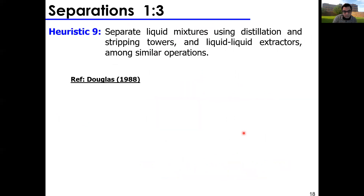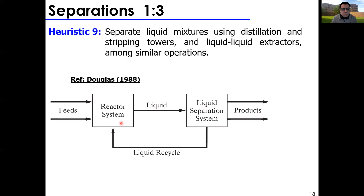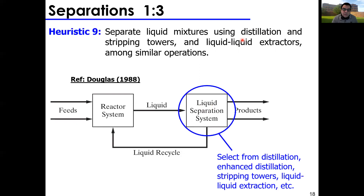Heuristic nine: separate liquid mixtures using distillation and stripping towers and liquid-liquid extractors. If you have a liquid product with two species and want to separate them, use a liquid separation system. This comes down to identifying the correct separation technology for liquid species. You don't want to use membranes or filtration for liquids — that's a waste of money. Select from distillation, enhanced distillation, stripping towers, or liquid-liquid extraction.